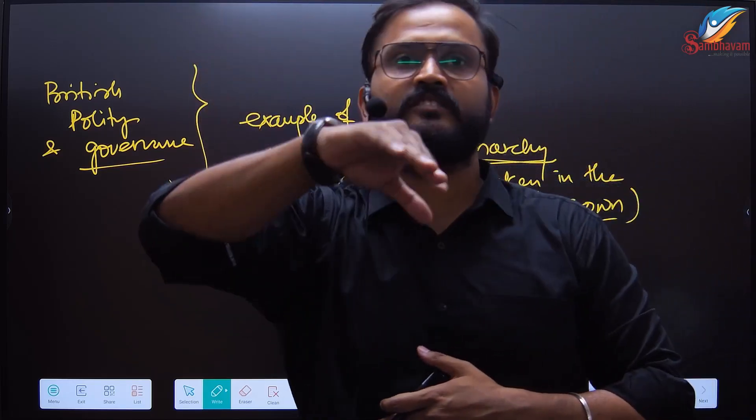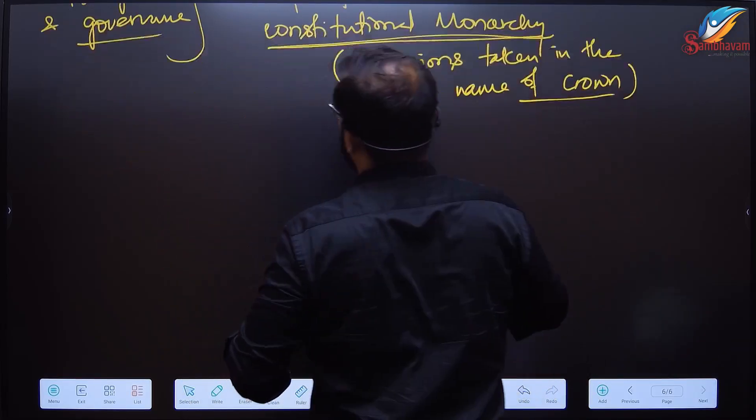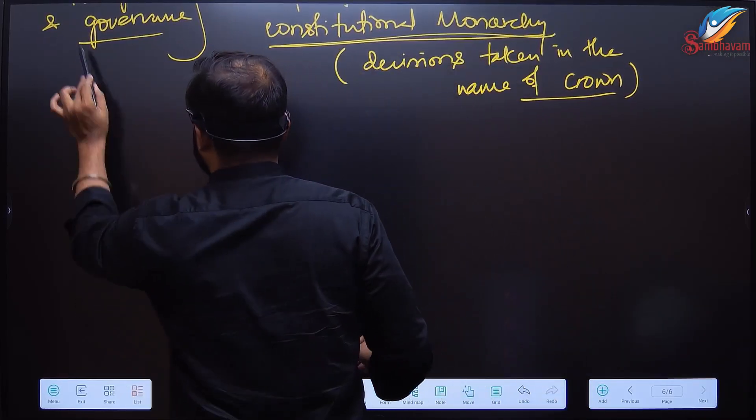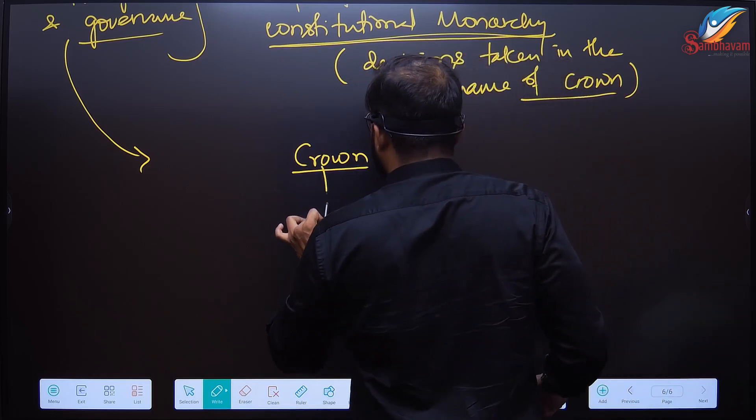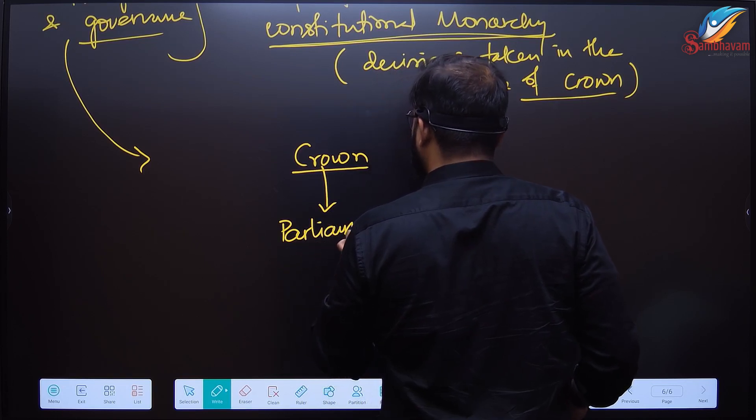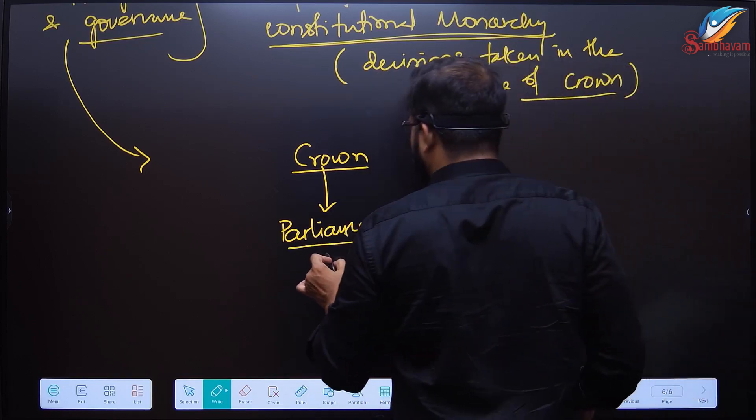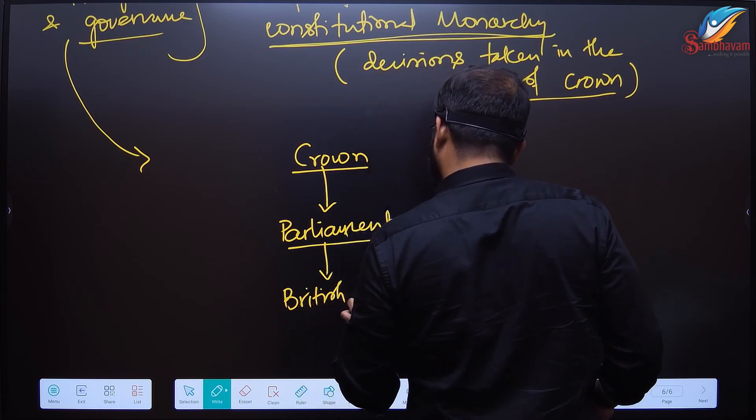Let us understand the British polity and governance. At the top we have the Crown. Beneath the Crown we have the Parliament, the British Parliament, known as the Westminster model. Within the Parliament, the legislature, there is the British Cabinet. In Indian counterpart that is known as Council of Ministers.